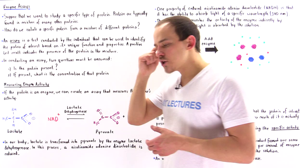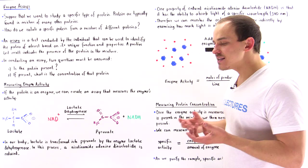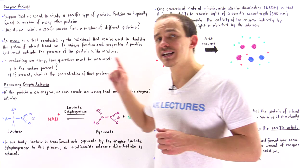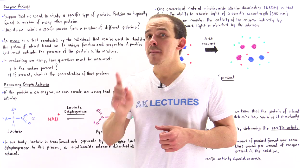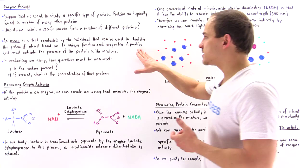To answer question number one — to determine whether or not our protein is present in that sample — we have to conduct a protein assay. A protein assay is some type of test or procedure that allows us to identify the presence of that specific protein of interest based on some specific property or functionality of that protein, as we'll see in just a moment.